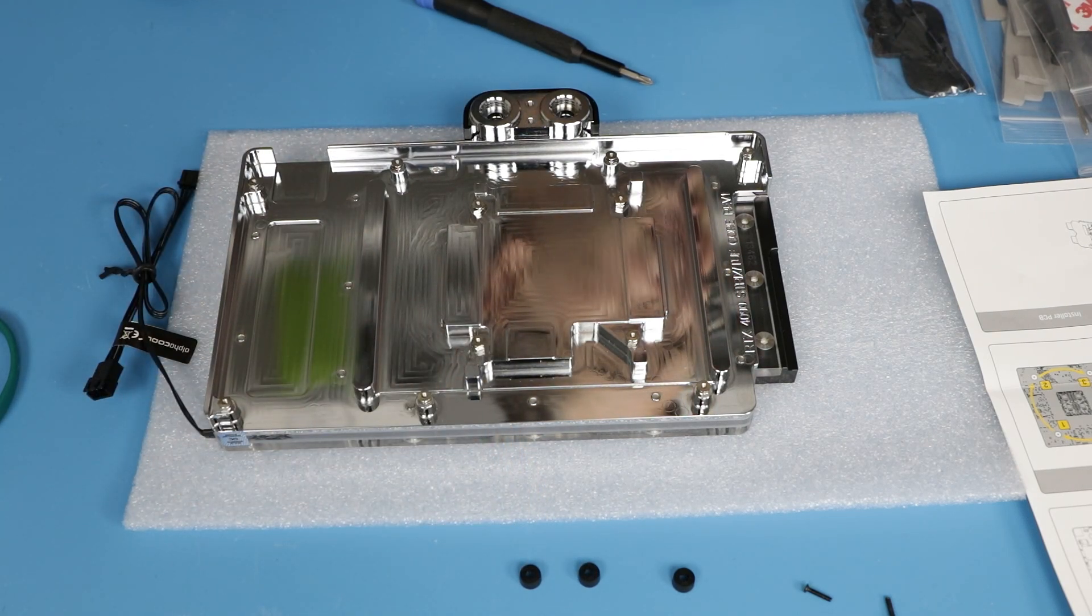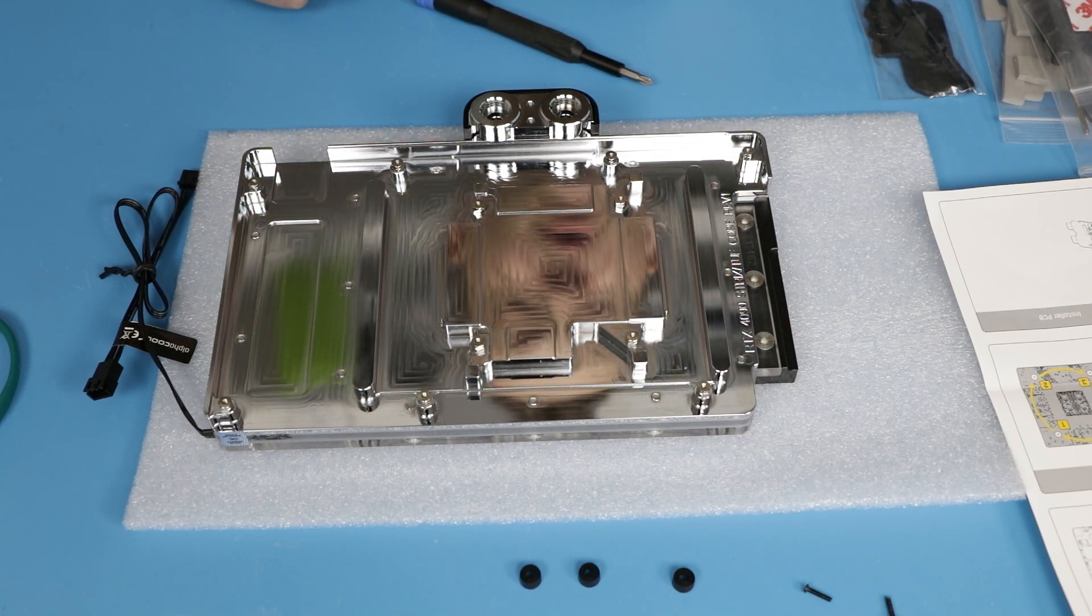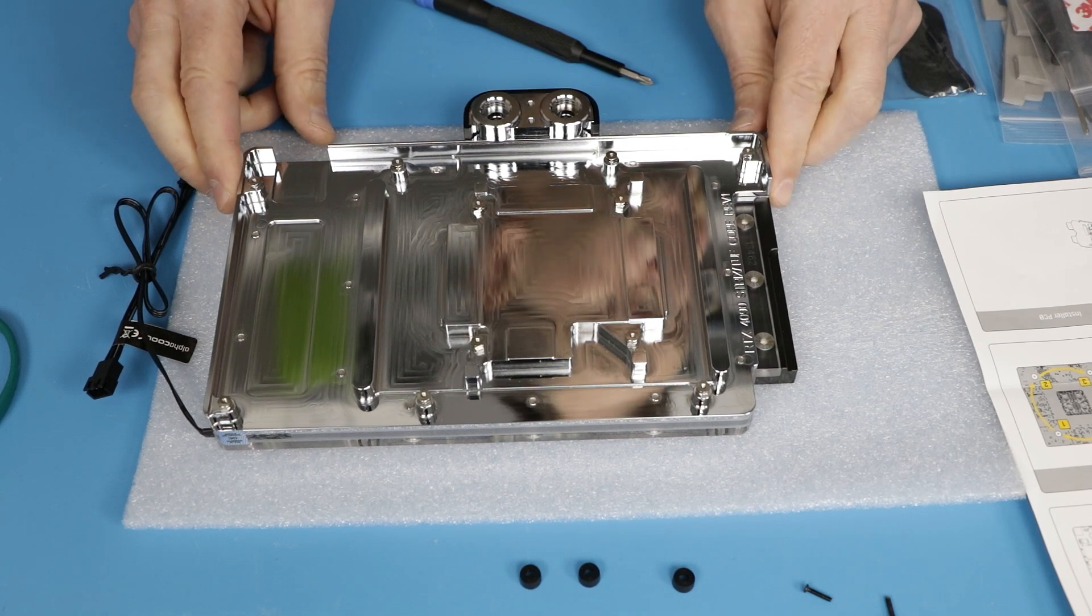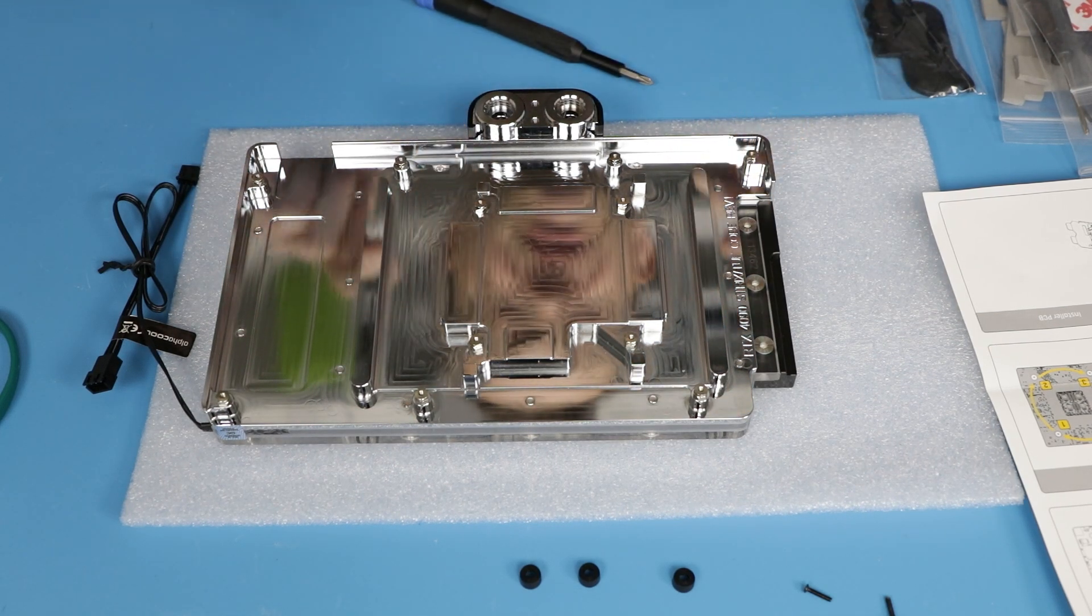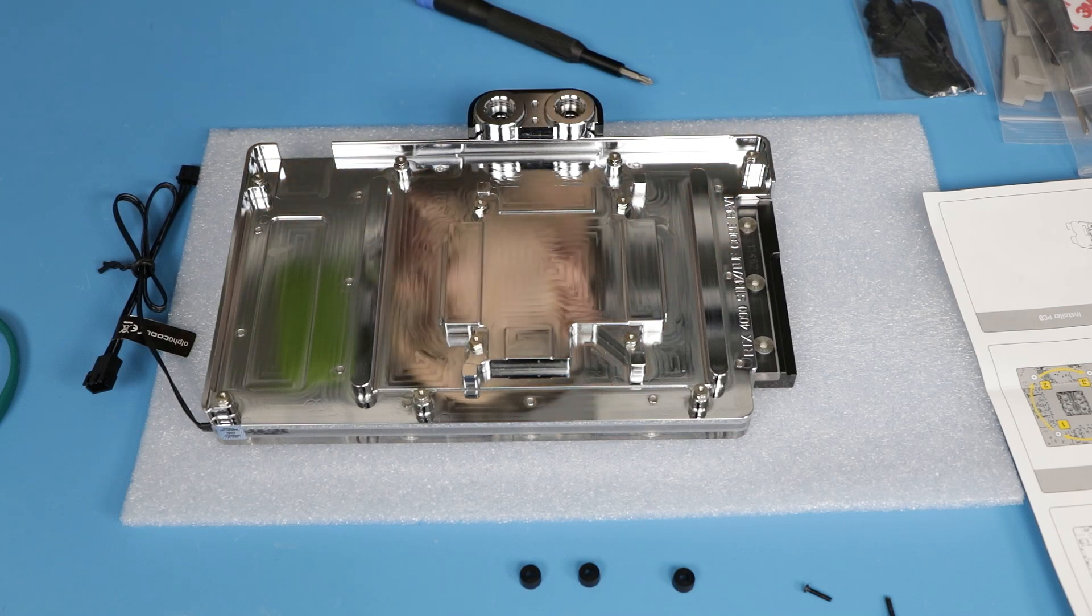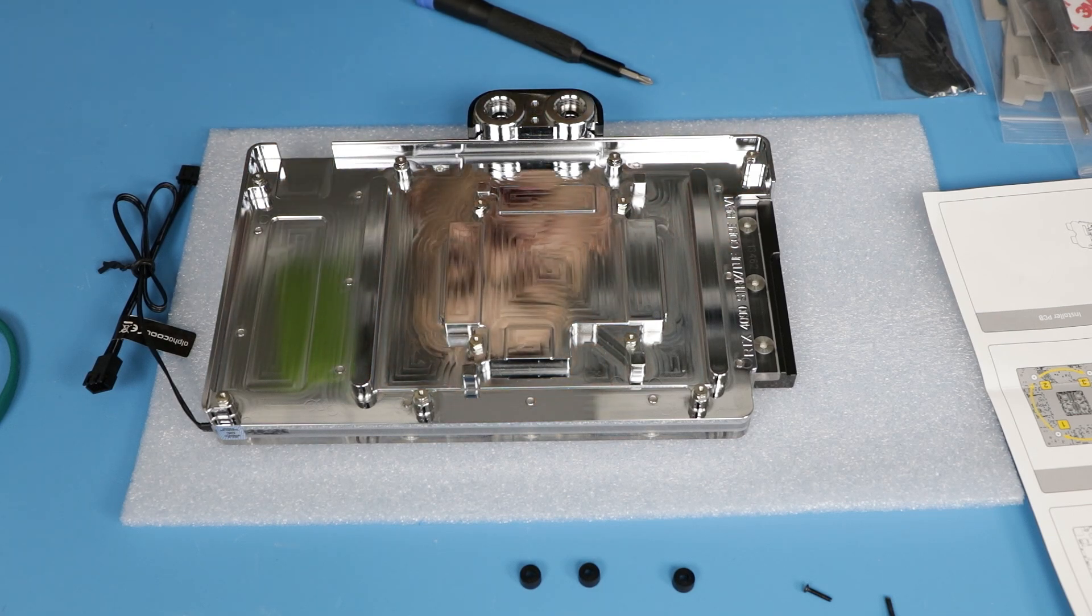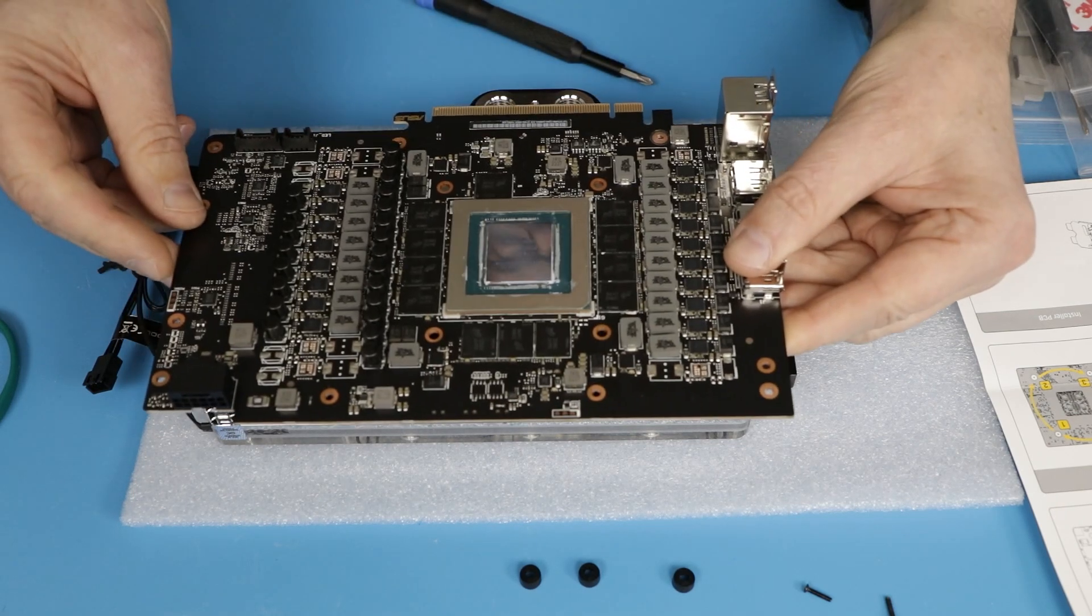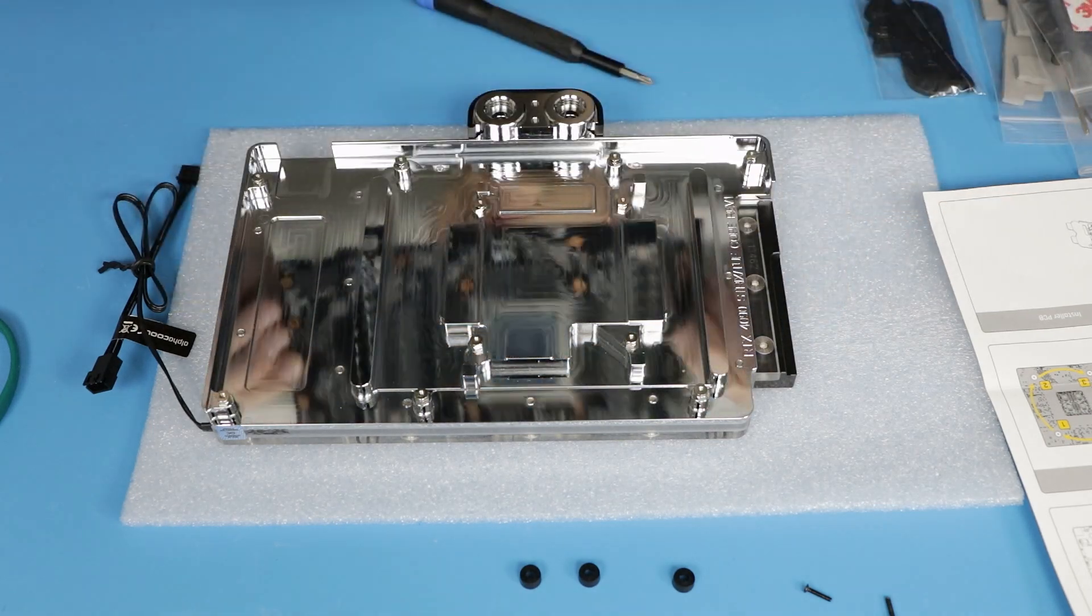The next step is going to be placing all thermal pads on this block. Interesting enough that they put thermal pads right on the block. On the GPU here it's a little bit opposite, and we only will put thermal paste on the GPU and then we will lower it down.